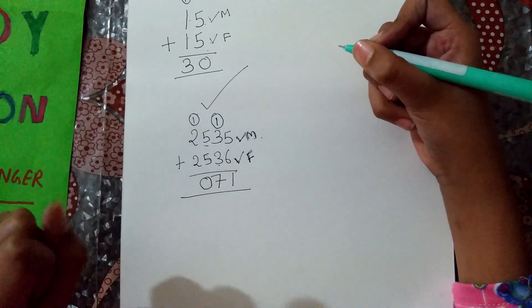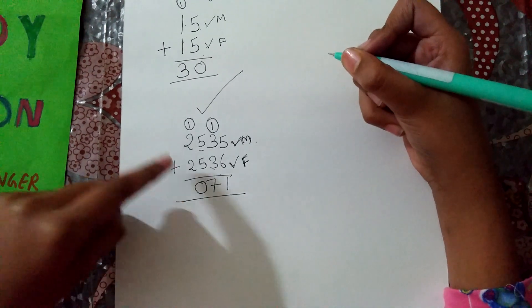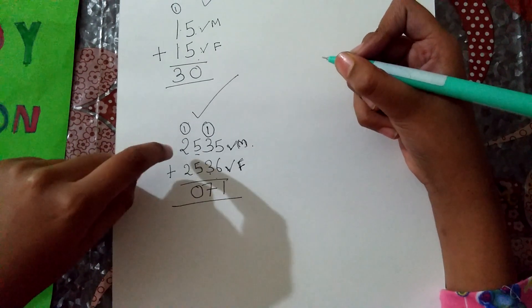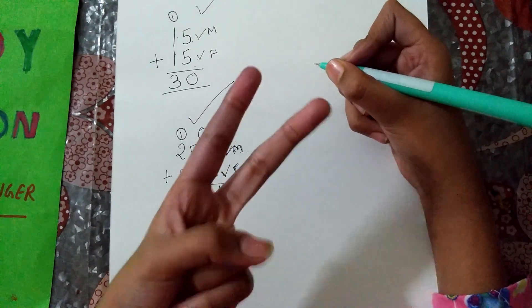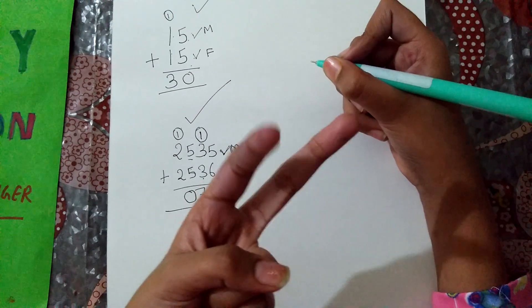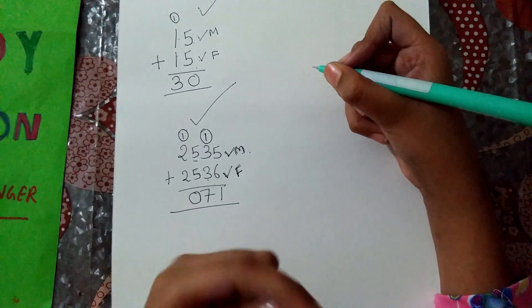Now, we will go in second digit. This is 2 plus 2. You know, what is 2 plus 2? After 2, 3, 4. 4 plus 1, 5.